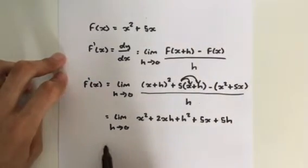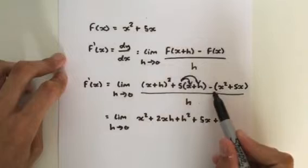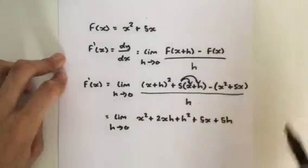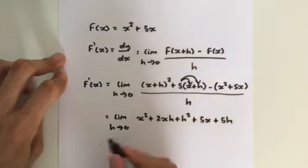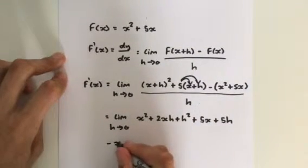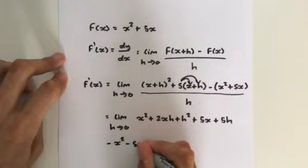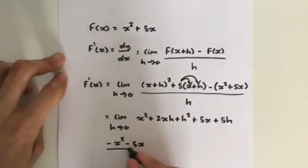Alright, go over here. We've got no room. So this one here, because there's a minus outside, this plus in the bracket becomes a minus. So we get minus x squared minus 5x. Okay? That's all divided by h.